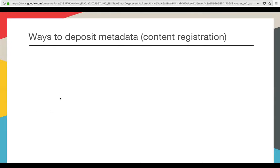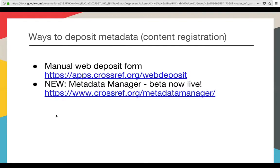We've heard about the many benefits of making richer metadata available through Crossref — but how do we actually make this happen? Everything starts at content registration. This is how you deposit your metadata and there are five different ways to achieve this. The first is the manual web deposit form, and new this autumn is Metadata Manager, now in beta and live. Both of these forms have something in common: you enter information manually and the system turns it into XML for you in the background.